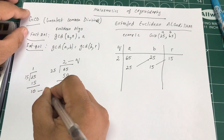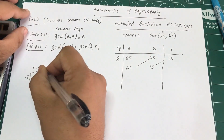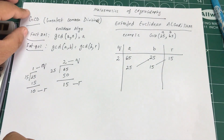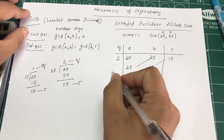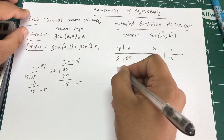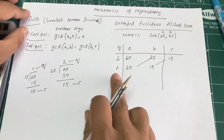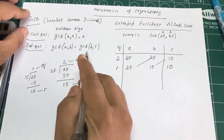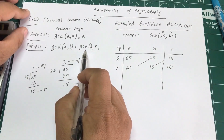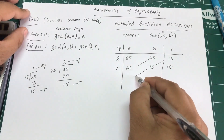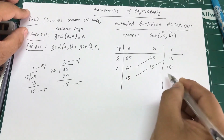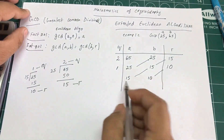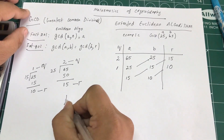We haven't reached the zero condition yet, so we bring 15 down as the new A and 10 down as the new B and divide again.